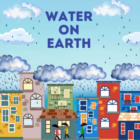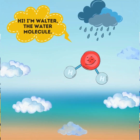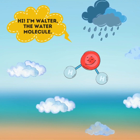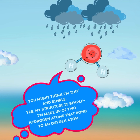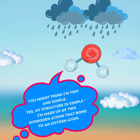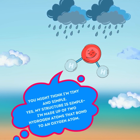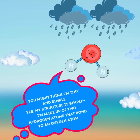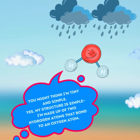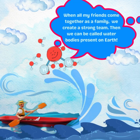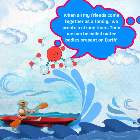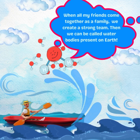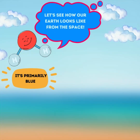Hi, I'm Water, the water molecule. You might think I'm tiny and simple — yes, my structure is simple. I'm made up of two hydrogen atoms that bond to an oxygen atom. When all my friends come together as a family, we create a strong team, and we can be called water bodies present on Earth.